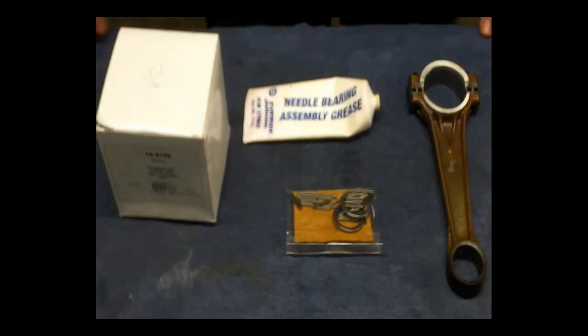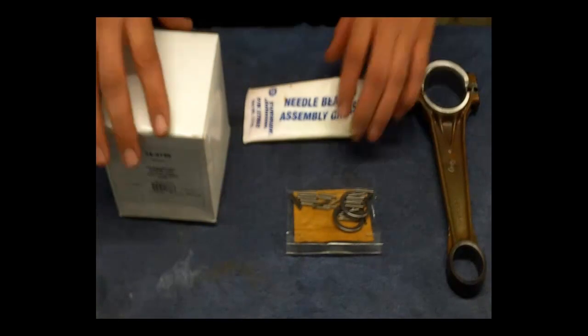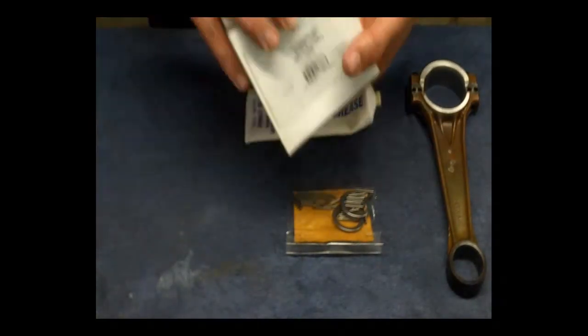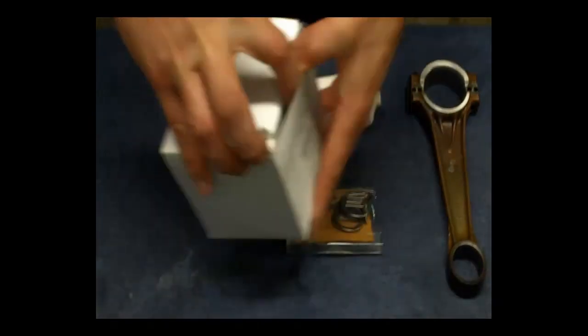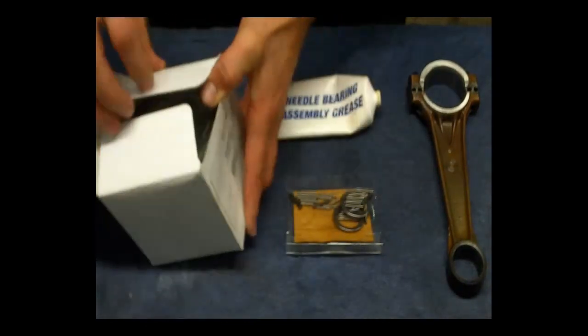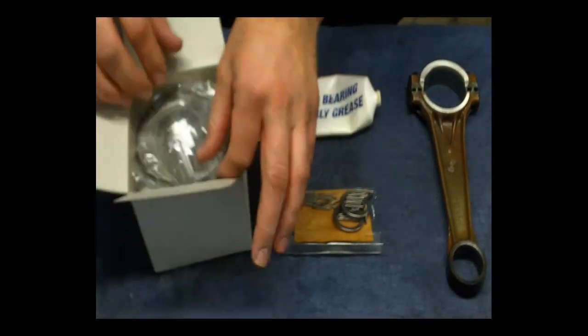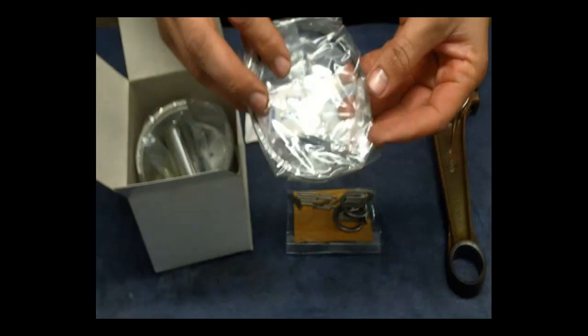Hi, it's Jeff here from outboard-boat.com. In this video I'm going to be demonstrating how to install a piston onto a connecting rod for a two-stroke outboard. This engine is a V6 200hp Evinrude.